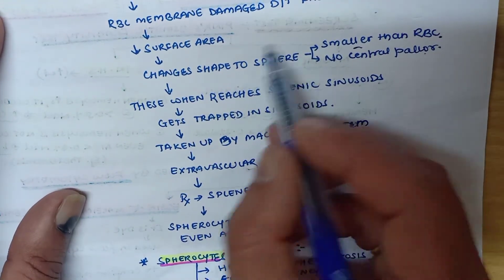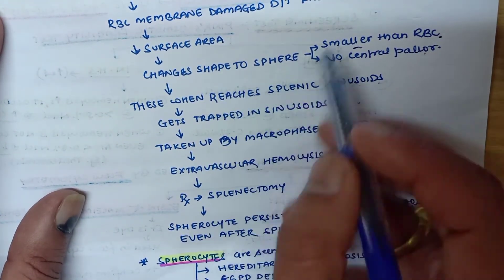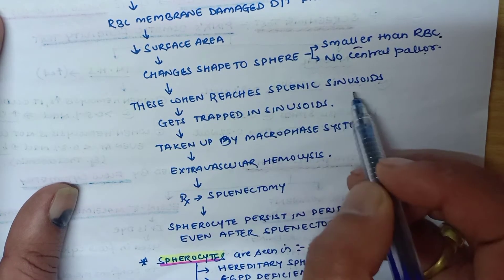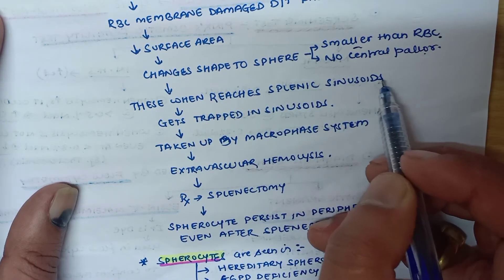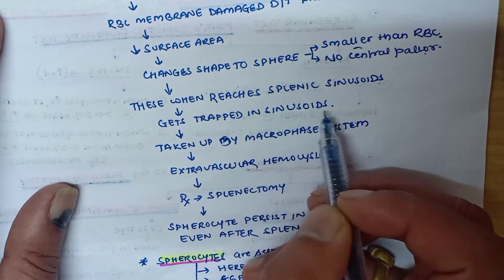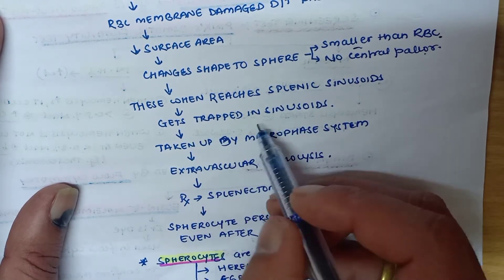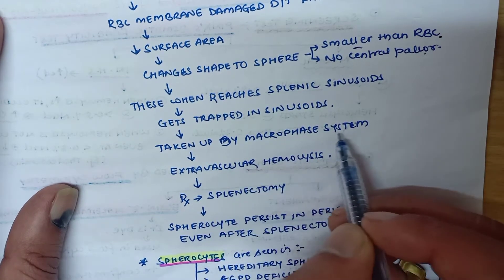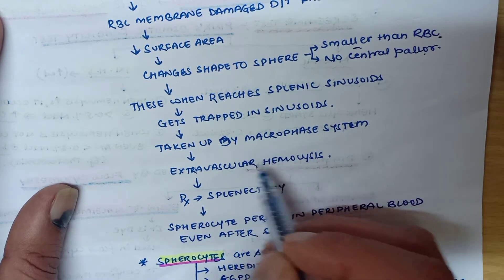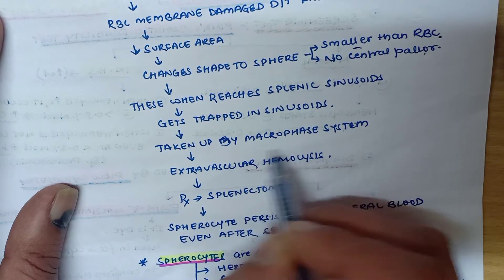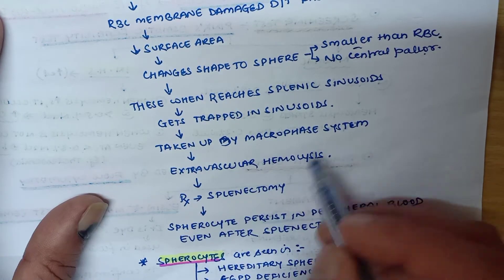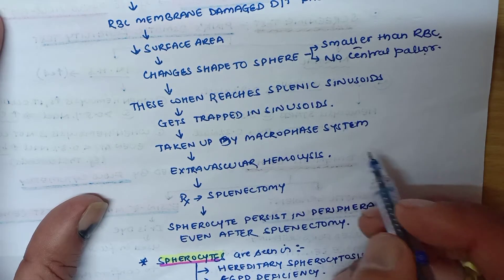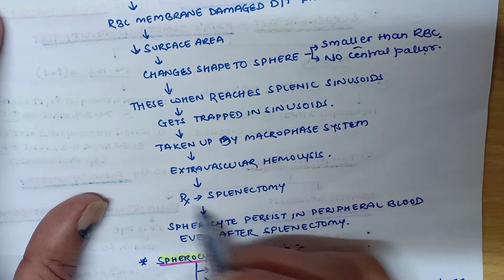These spherocytes pass through the spleen. When they reach the splenic sinusoid, they get trapped and are taken up by the macrophage system, resulting in extravascular hemolysis. The hemolysis occurs in the sinusoid of the spleen, so the treatment is splenectomy.